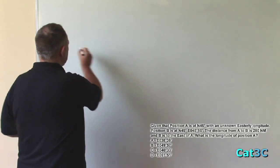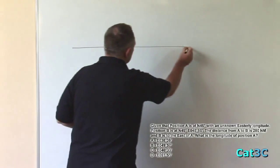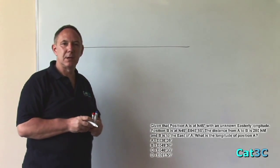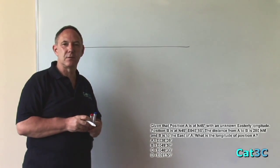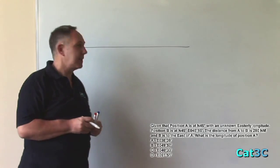Now, to solve this question, what I'm going to do is to start with a straight line to represent the north 45 latitude, given that both positions A and B are on the same latitude. The question also tells me that B is at east 45 degrees 15 minutes and that B is to the east of A.